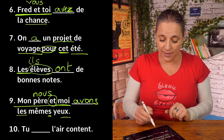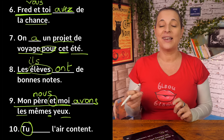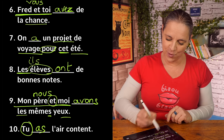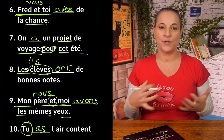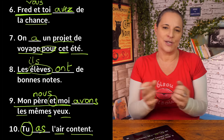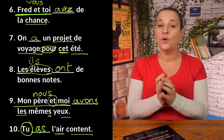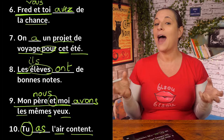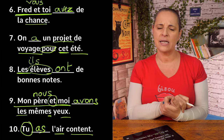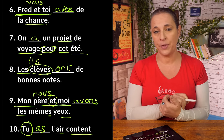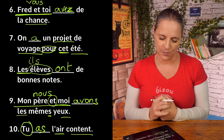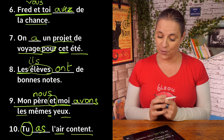And the last one has an indicator: tu as — l'air content. 'Avoir l'air' is an expression. Tu as l'air content means 'you seem happy'. Tu as l'air triste — you seem sad. Tu as l'air fatigué — you seem tired. So 'avoir l'air' is the expression we want.